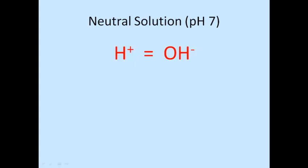A neutral solution has an equal number of hydrogen ions and hydroxide ions. You can show it like this: H equals OH.